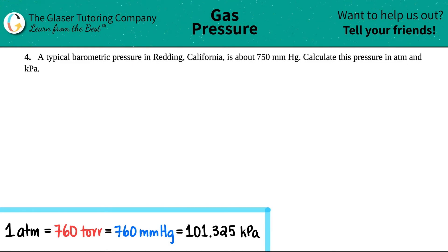Number four: A typical barometric pressure in Redding, California is about 750 millimeters of mercury. Calculate this pressure in atm and in kPa, which is kilopascals. Okay, so it looks like we're just doing a conversion question. They gave us a barometric pressure, and in this case we're reading it in millimeters of mercury. MM is millimeters, and Hg on the periodic table is mercury, so it's 750 millimeters of mercury. We just have to convert this into different pressure units.